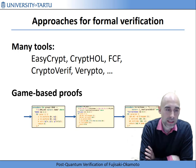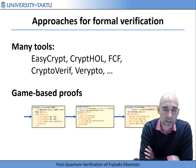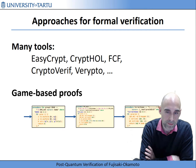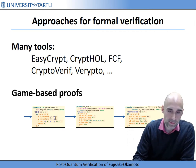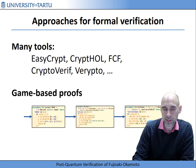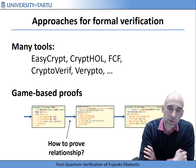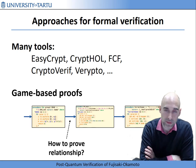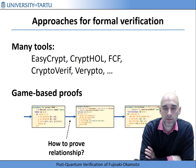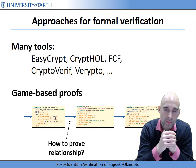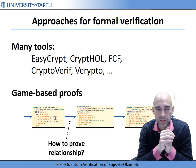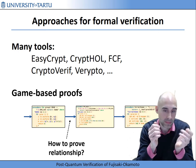In game-based proofs, we have several games — symbolized here by program fragments — and from one game to the next we have a minimal difference in behavior. The interesting question, which becomes very relevant in formal verification, is how do we prove the relationship between two consecutive games. This is the point where different frameworks and approaches differ in subtle or even big ways.